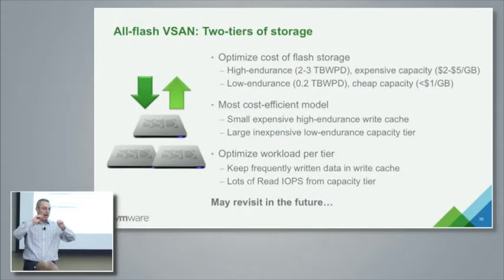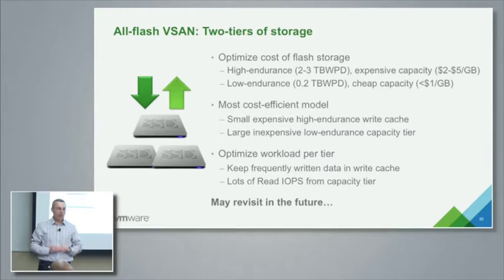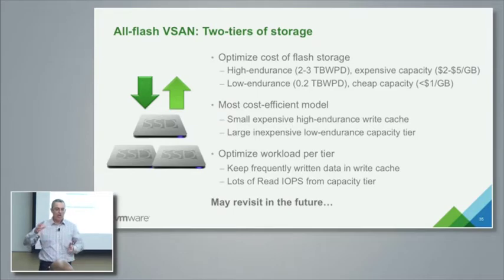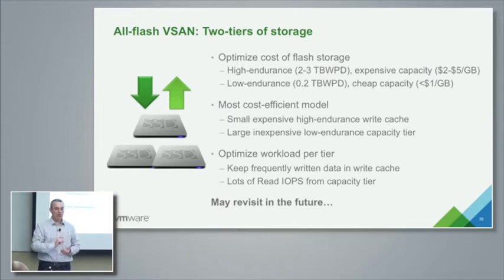All-flash. In the current version of the product, vSAN 6.0, we are still using two tiers, even with all-flash configurations. The reason is that our product management team spent hours and hours with all the flash vendors, creating complex models and spreadsheets.